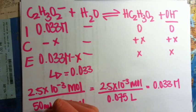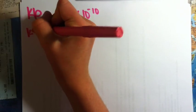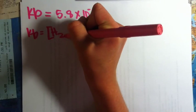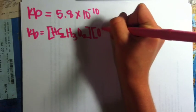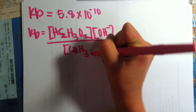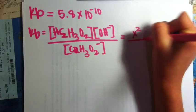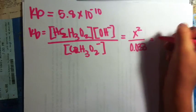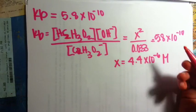The Kb for this equation is 5.8 times 10 to the negative tenth. We know that Kb equals the concentration of acetic acid times the concentration of hydroxide over the concentration of acetate ions. Plugging in the concentrations from the ICE box, this is x squared over 0.033, which equals 5.8 times 10 to the negative tenth. Solving gives x equal to 4.4 times 10 to the negative sixth molar.